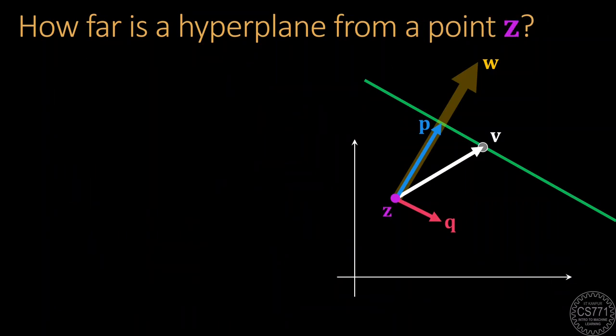It is simple to extend this trick to finding the distance of any point Z from a hyperplane. All we need to do is shift the coordinate axes to bring Z to the origin by using a change of variables. Let the new variable be called Y which we define as X minus Z.